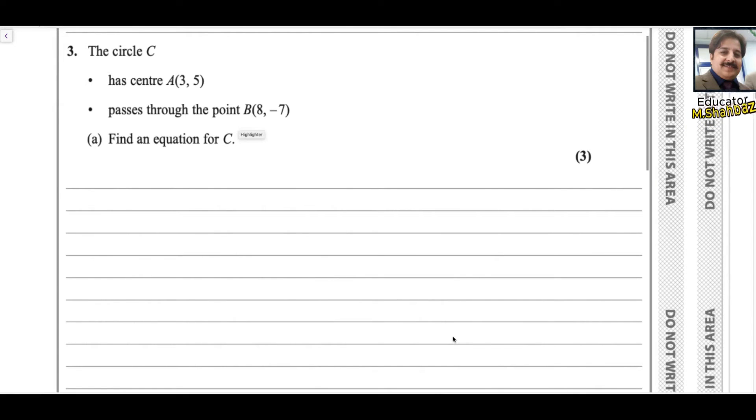The circle C has center A(3,5) and passes through point B(8,-7). Find an equation for the circle. Let me draw a circle for you. This is the radius, A is (3,5) and B is (8,-7). B lies on C.